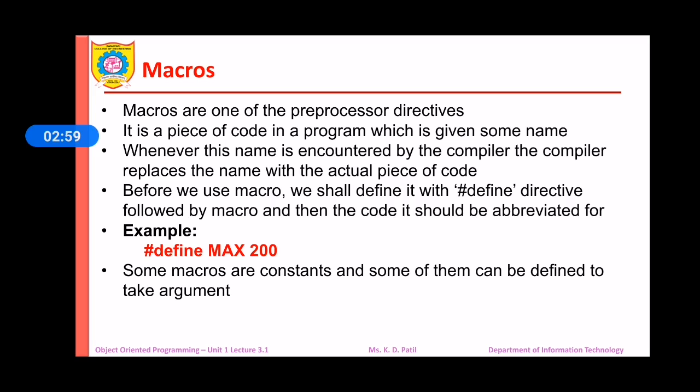For example, hash define MAX 200. Here, hash define is our preprocessor. MAX is our macro and 200 is the value, is the code assigned to the macro MAX. Some macros are constants and some of them can be defined to take the argument. Now here, MAX is our constant macro.